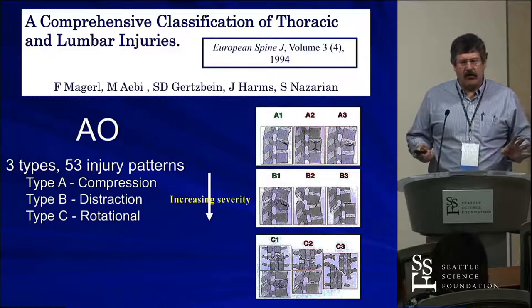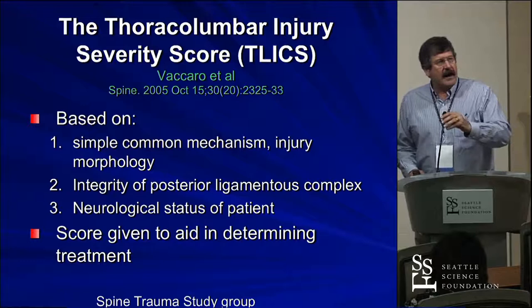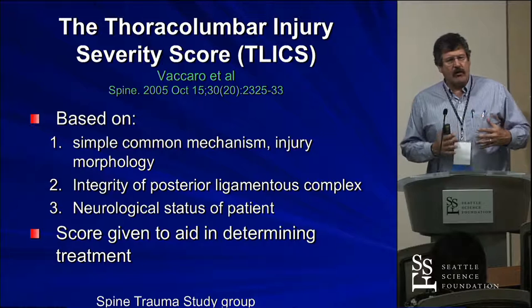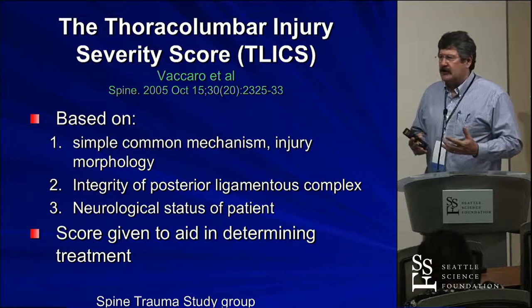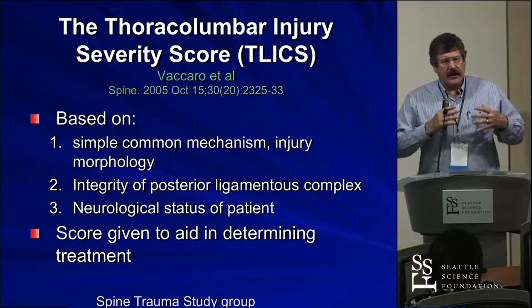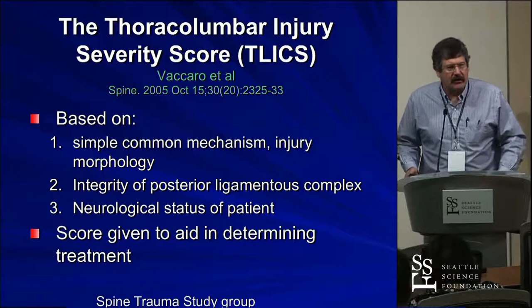None of these classifications ever took into account neurological deficits. So the Spine Trauma Study Group and Alex Vaccaro came up with a way of incorporating what was really important. Part of it was the morphology — all these years we learned morphology. But what really made something stable or unstable was often the posterior ligamentous complex. So it started with morphology: is this a compression, a burst, a flexion distraction, a fracture dislocation? Then it asked: what's the status of the posterior ligamentous complex? When we go from stable to unstable burst, that's the key component.